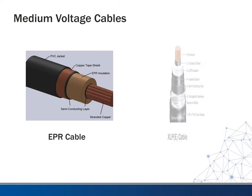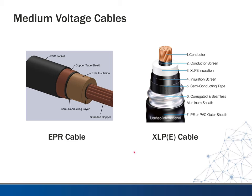Taking a quick look at EPR and XLP cable, you can see these are pretty built up compared to lower voltage wiring. The XLP cable has a conductor, conductor screen, XLP insulation, insulation screen, semi-conducting tape to help dissipate the field, and then usually an aluminum sheath. On the EPR side, it's similar — you have a semi-conducting layer, EPR insulation, copper tape shield, and a PVC jacket rather than a metallic one. You can see this stuff is pretty heavy duty and can be tough to work with.